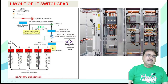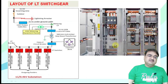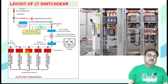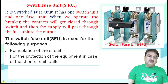This supply is then distributed further. The control room receives the supply, and there is various equipment located in the control room. All switchgear is transferred through other areas via switch fuse units, MCB, ELCB, and MCCB. Now we will discuss all these — switch fuse units and circuit breakers — one by one.